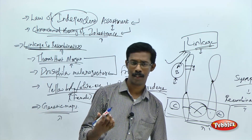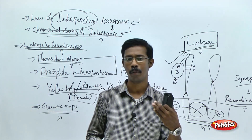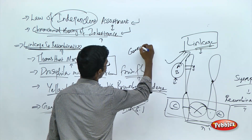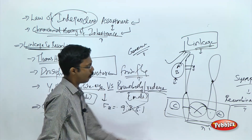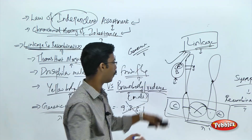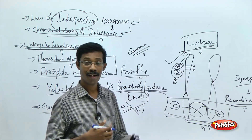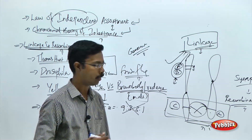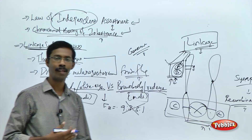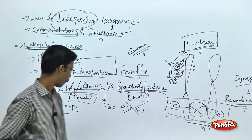According to Mendel, genes or factors travel independently through generations. But according to Thomas Morgan's linkage concept, there are some genes tightly bound to each other because of their proximity. One more term to remember is the genetic map. A student of Morgan — Sturtevant — used linkage to map the particular genome. When you know the position of gene A, you can predict the position of gene B because B is always in proximity to A.